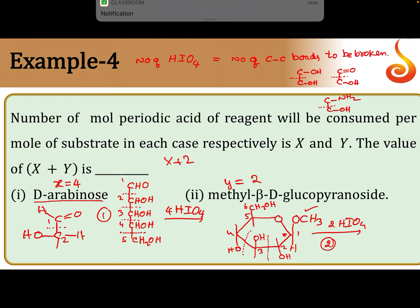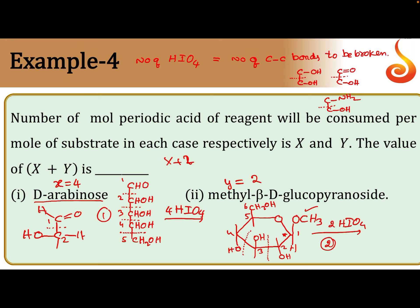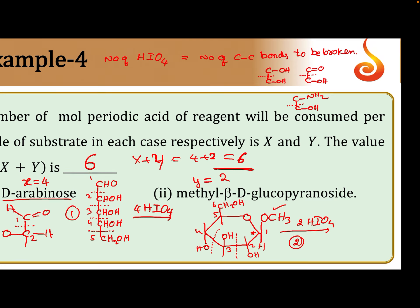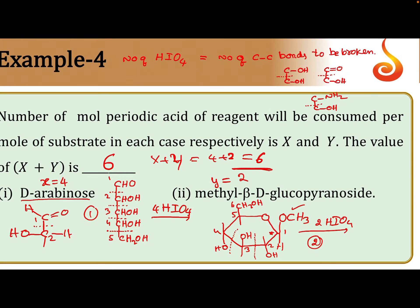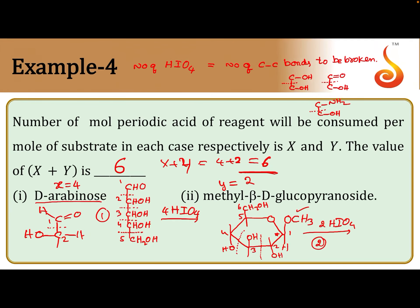Therefore, X plus Y is equal to 4 plus 2, that is 6. So the answer is 6 moles. 6 moles of HIO4 is required.